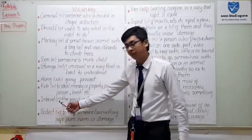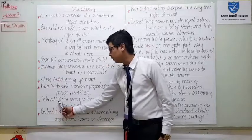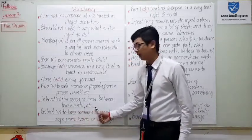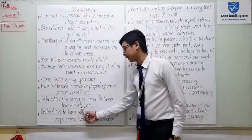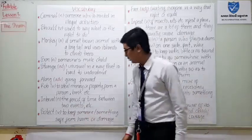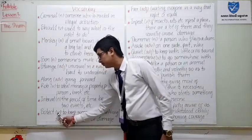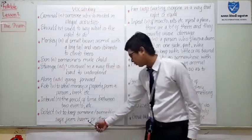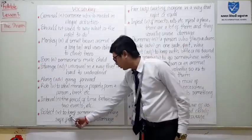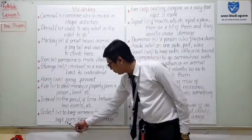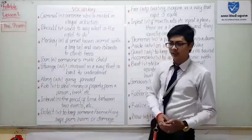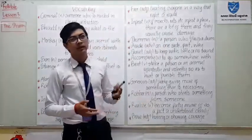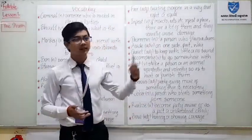Next word is 'interval.' Interval. Function: noun. Meaning: the period of time between two events. Next word is 'protect.' Protect. Function: verb. Meaning: to keep someone or something safe from harm or damage. For example: 'I protect myself from coronavirus' — cleaning hands, wearing a mask — we call that protect.